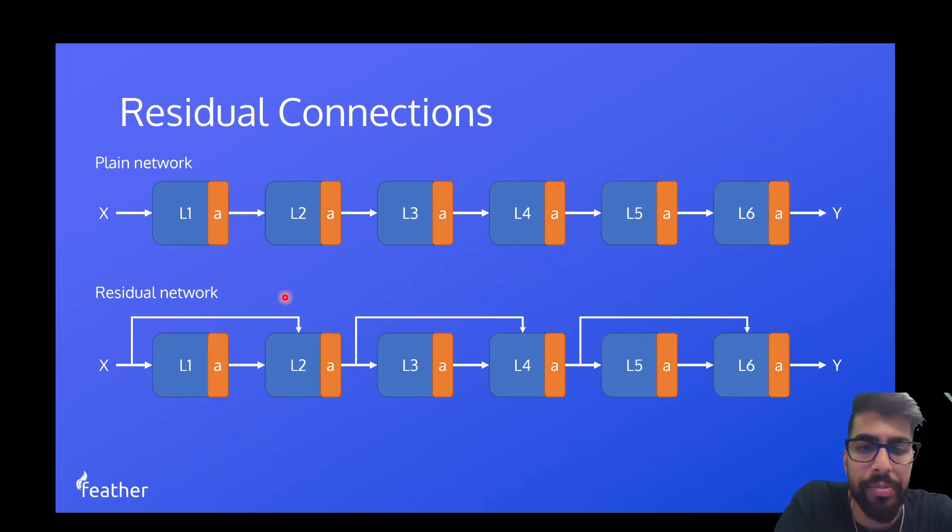What a residual network does is it learns the difference from the previous layers. And again, I won't dive too much into the maths, but Andrew Ng has a great little video on how residual connections work. If you are interested in the theory behind it, then check it out. We're just going to take the assumption of this is how it works and it does work and then we're just going to run with that and implement it because it's kind of separate from the transformers. It has its origins in computer vision.